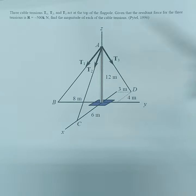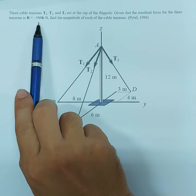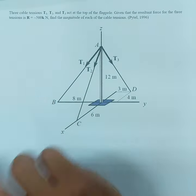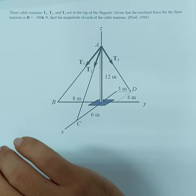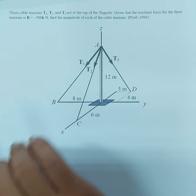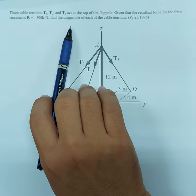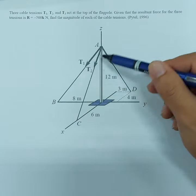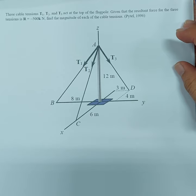So the given resultant force acts along the z-axis, downwards — negative z-axis direction. We need to find the magnitude of each of the cable tensions: T1, T2, and T3.